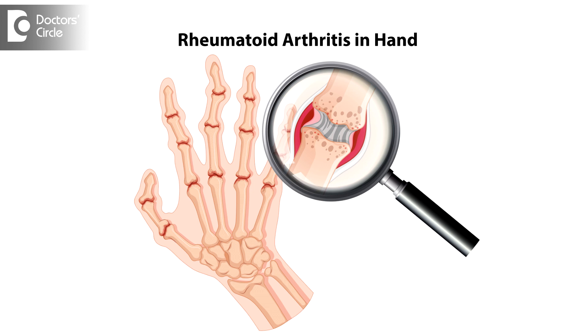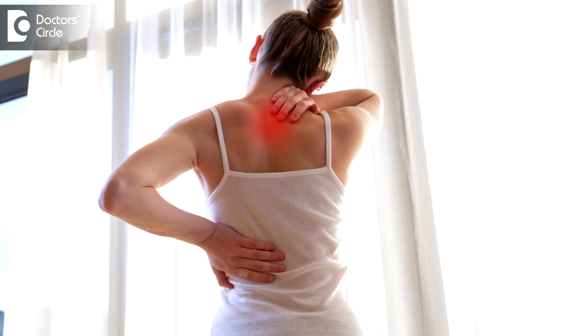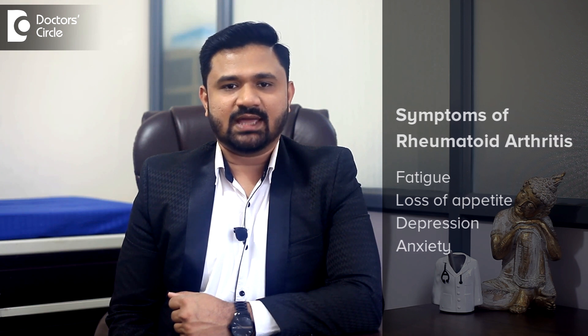In rheumatoid arthritis, most commonly small joints are involved and they are symmetrically involved. It can also strike the shoulder, elbow, and hip joint. Rheumatoid arthritis is associated with other systemic features like fatigue, loss of appetite, depression, and anxiety.